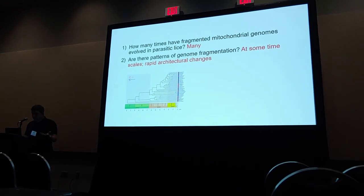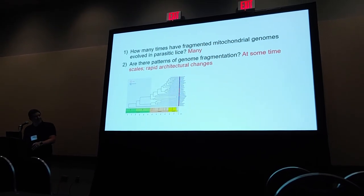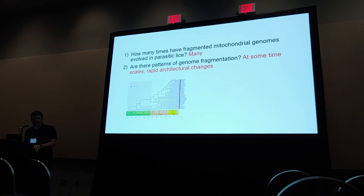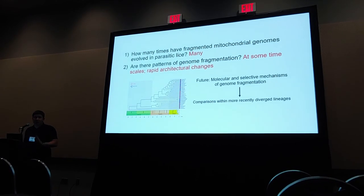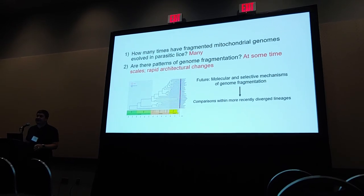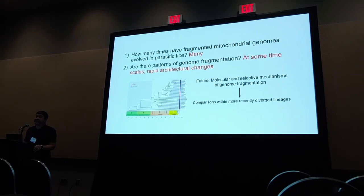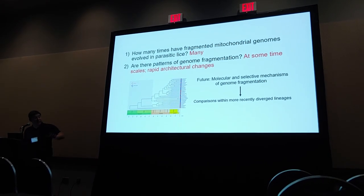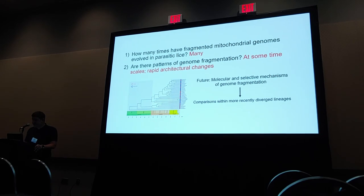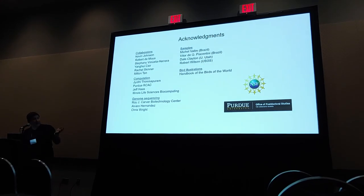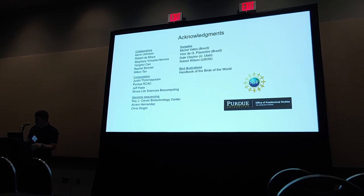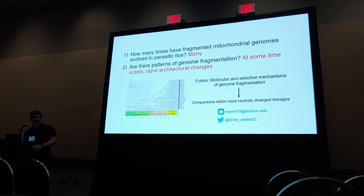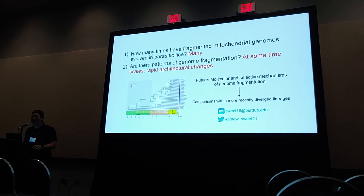To wrap up: how many times have fragmented genomes arisen in lice? It seems to have happened a lot — at least 12 independent origins. There do seem to be some patterns, but only at certain scales because of rapid architectural change. Going forward, the key question is understanding the mechanism of fragmentation: why do we see so many instances in lice when it's so rare across the metazoan tree? Looking at comparisons within recently diversified lineages is a useful way to approach that. Thanks very much.